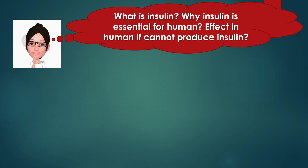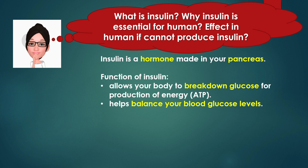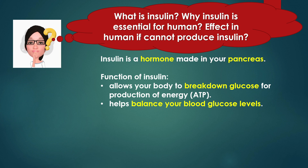What is insulin? Insulin is a hormone made in your pancreas. The function of insulin is to allow your body to break down glucose for production of energy in the form of ATP. Insulin also helps balance your blood glucose levels.